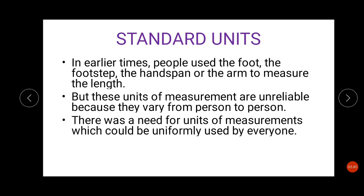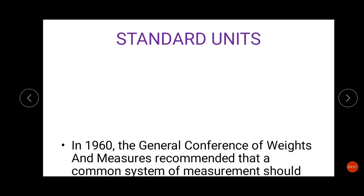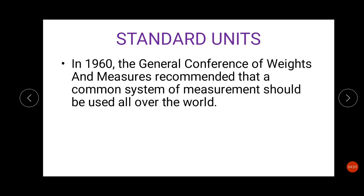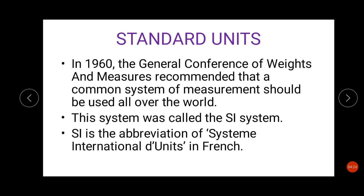So there was a need for a unit of measurement which could be uniformly used by everyone. No matter in which corner of the world you are, a measurement of certain things should not change. Such units are called standard units. In 1960, the General Conference of Weights and Measure was held, which recommended that a common system of measurement should be used all over the world. This system was called the SI system. Do you know what is the full form of SI system? SI is a French abbreviation of Système International d'Unités.